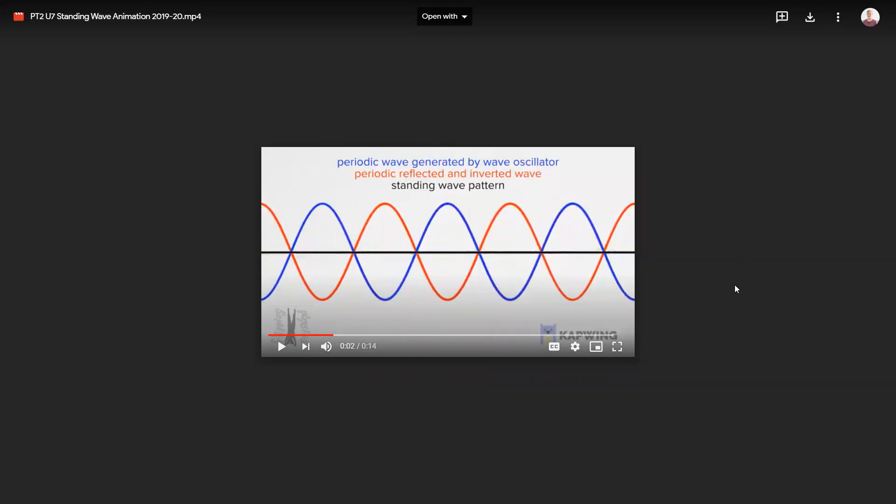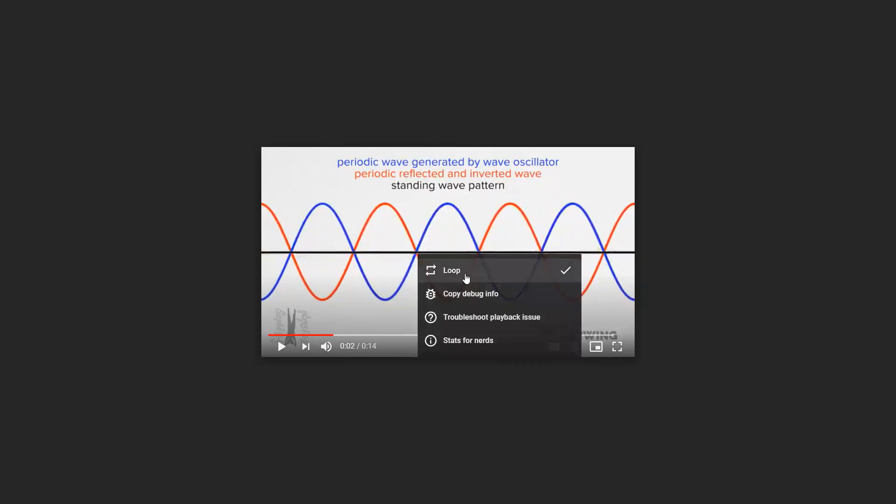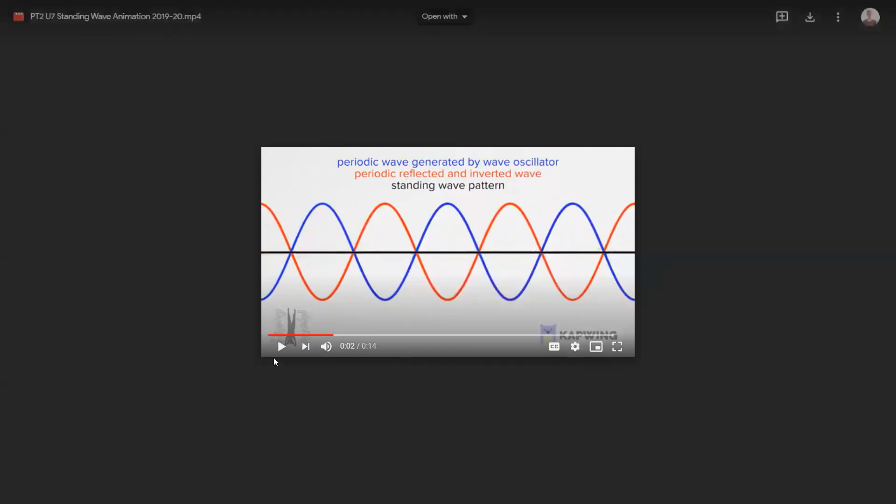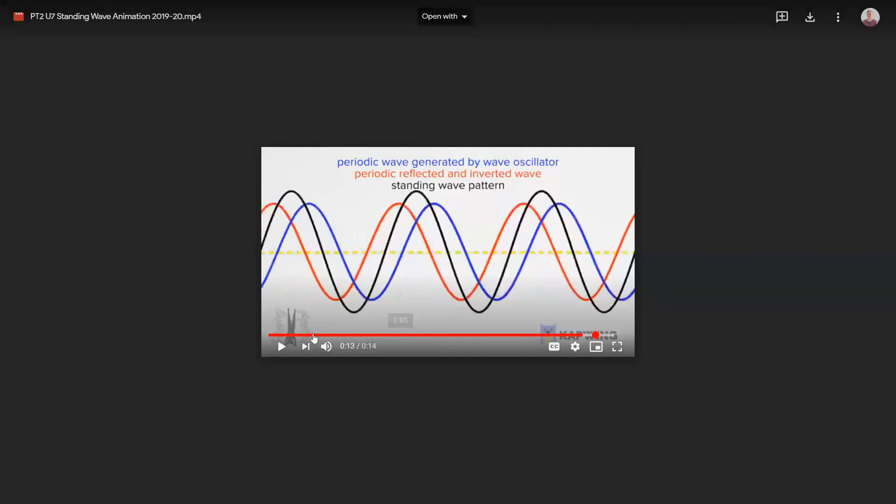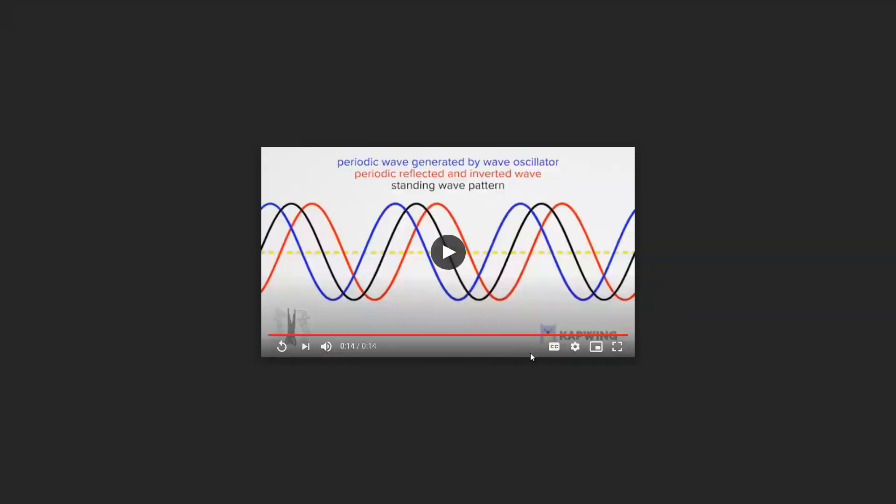To enable the loop feature on a Google Drive or YouTube video, right click anywhere on the player and you will need to make sure that the loop button right here is checkmarked. Otherwise, when you play the video, the video is going to end and you're going to need to replay it all over again.